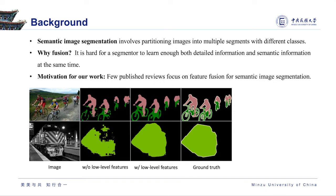The shallow layer of the network retains more details, while deep layers mainly extract contextual information. Many researchers have tried to design advanced feature fusion to merge and filter multi-scale features. Few published reviews focus on feature fusion for semantic image segmentation, so we review related works and conclude the trends and challenges of feature fusion.